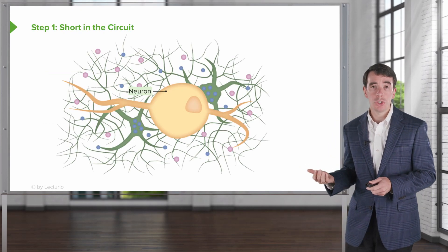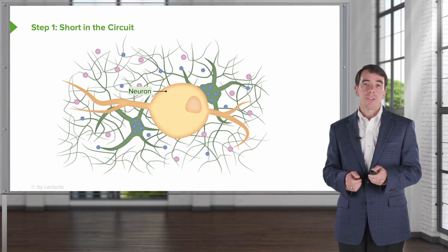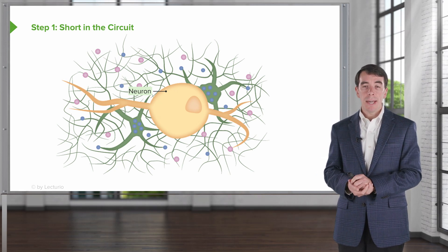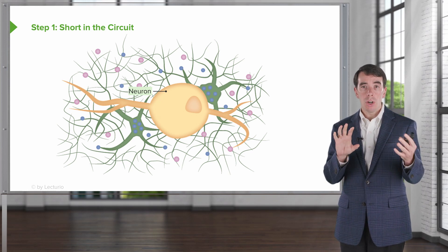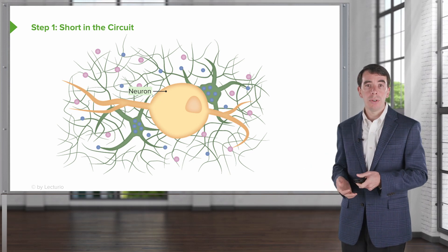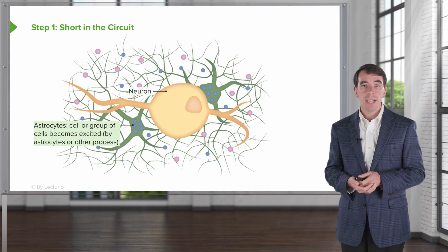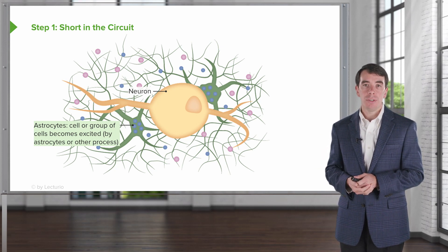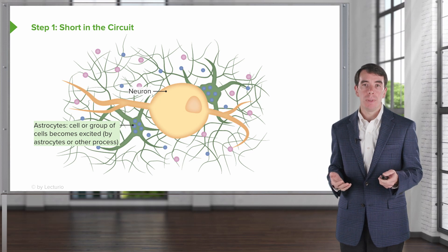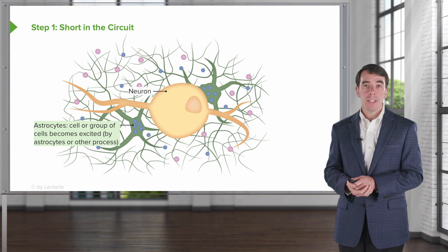Step one is a short in the circuit. We know that seizures come from neurons — they come from cell bodies in the gray matter. That's where all seizures arise. But critical in that process are all the other structures around the neurons, the astrocytes in particular. We see that astrocytes — those cells or groups of cells — become excited in the initial process of instigating a seizure. Those astrocytes are important in normal neurotransmission.